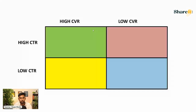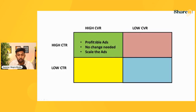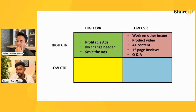Here's what I call the 2x2 metrics framework. First box — high CTR and high conversion rate: your ads are profitable, no changes needed, and you can scale. Second box — high CTR but low conversion rate: you're getting traffic but not enough purchases. You need to work on your secondary images, product video, A+ content, Premium A+ content if you have access, first-page reviews, and Q&A section.